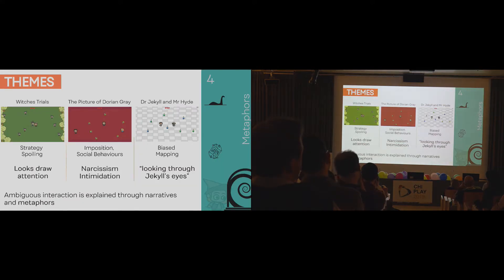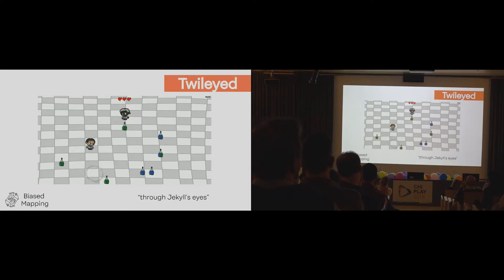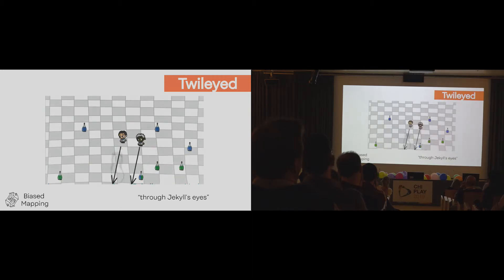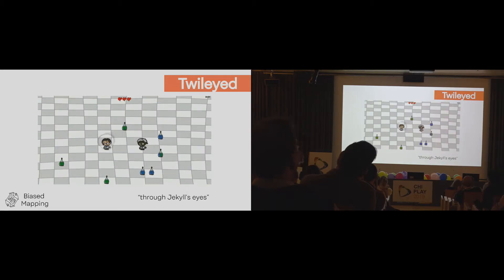Then we have other kinds of metaphors, like in the third game — looking through someone else's eyes. This game is based on The Strange Case of Dr. Jekyll and Mr. Hyde. The two characters have separated and need to collect bottles to stay that way. What we introduce is something very challenging: Hyde moves through Jekyll's eyes, meaning Hyde will move towards the point that the player, as Jekyll, is looking at, creating this bias mapping and making the game really, really difficult. The challenge is for the player to understand this mapping and solve the puzzle.